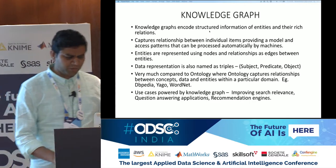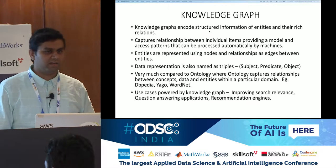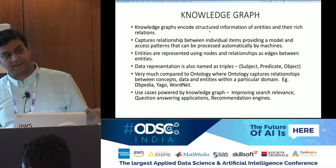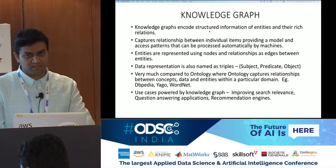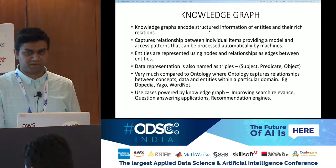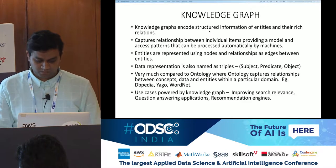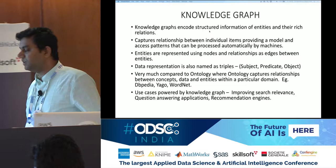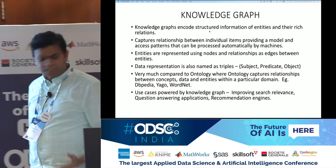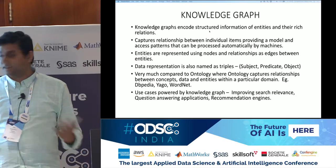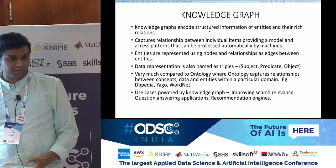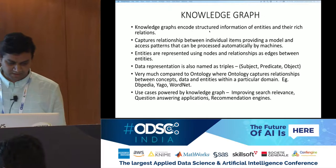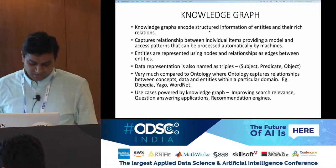Ontologies have solved many problems in particular domains. People have converted structured RDBMS data into ontologies for efficient querying. Knowledge graphs are very similar. Open-source ontologies include DBpedia — which is Wikipedia's structured clone — YAGO, and WordNet.